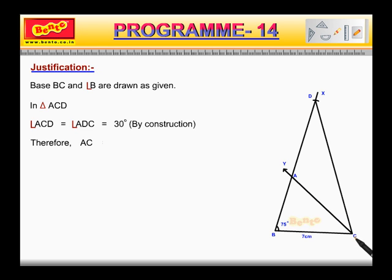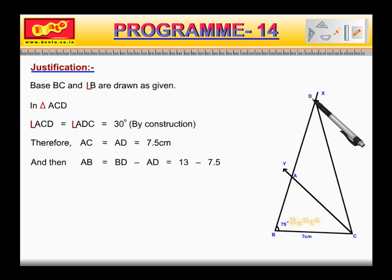Therefore, AC is equal to AD, which is equal to 7.5 cm. And then AB is equal to BD minus AD, which is equal to 13 minus 7.5 cm, which gives us 5.5 cm.